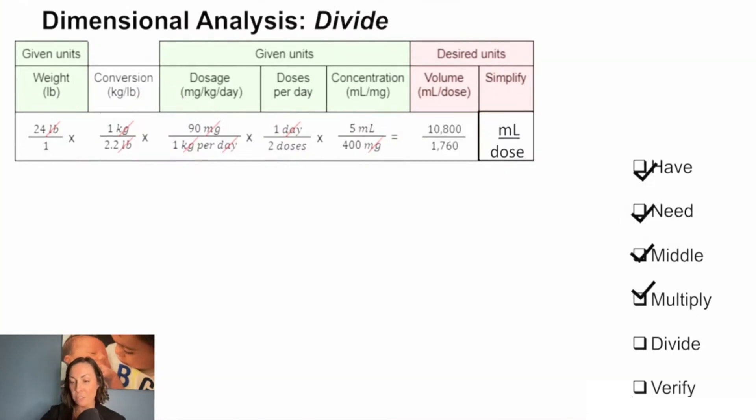Now we can do our division. When you divide 10,800 by 1,760, we get 6.1363. Of course we need to round, and it said that we were going to round to one decimal place. How do we do that? We're going to look to the right of the decimal. If it's 5 or above we would round up, but it is a 3, so it's less than 5, so we get to drop all this. We're going to give 6.1 mL.